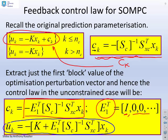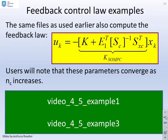You find you get minus K, that was your original feedback, plus E1 transposed Sc inverse Sxc times Xk. And the key thing here is you'll notice that your feedback has changed. So the consequence of not having a synergy between your terminal mode feedback and your performance index is that when you do your optimization, your feedback law changes.